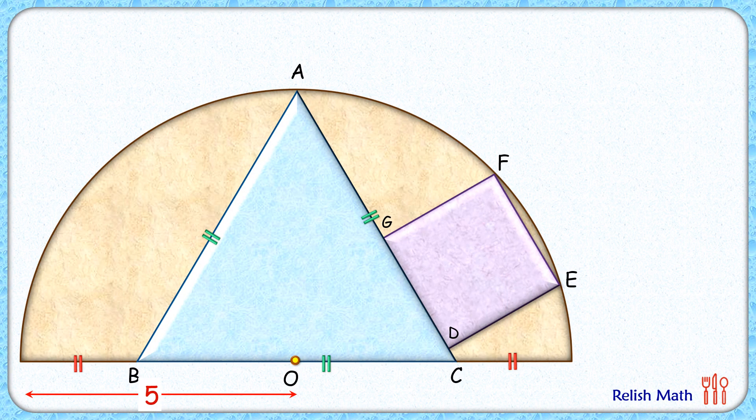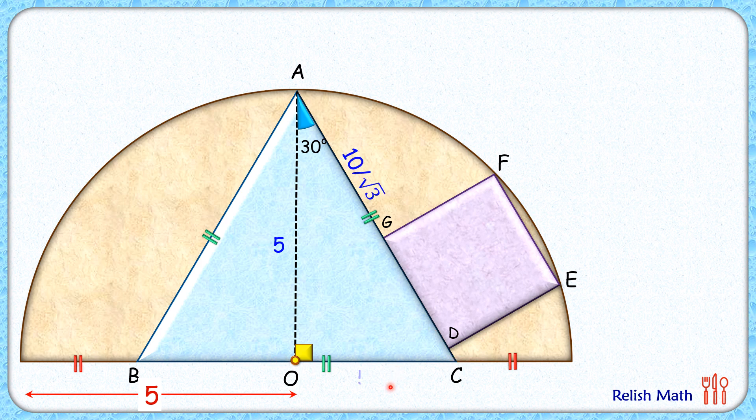Let's check this simple and elegant solution. To start with, let's join AO which is also the radius of the semicircle, thus 5 centimeters. This angle here will be 30 degrees, and AC length we can find using trigonometry. AC will be 10 by root 3, and OC will be half of that, or 5 by root 3.